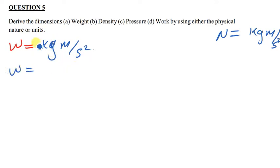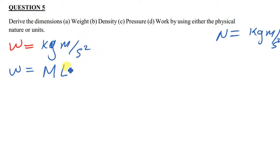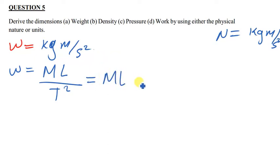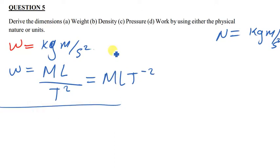So kg is simply just mass, the meters there represents the length, and the seconds there represents the time. So the weight can also be written as M — these are the dimensions — ML, and then when t² comes on top it's going to be T to the power negative 2. So the dimensions for weight are MLT⁻².